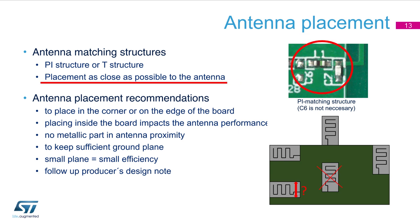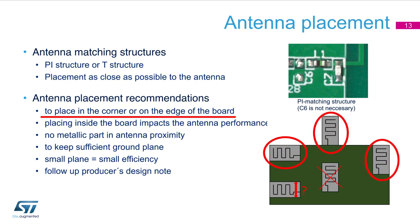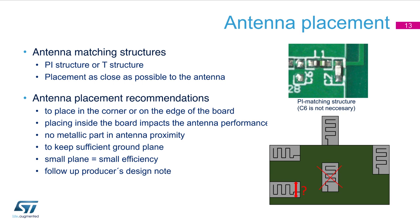The antenna should be matched by a matching network that is as close as possible to the antenna. Commonly P or T structures are used, placed just at the antenna port. The antenna itself must be placed in the corner or on the edge of the board — placing it inside the board affects the antenna's performance because of the metal plane around it. It should not be disturbed by any metallic part that impacts the impedance of the antenna. This is valid for both PCB and chip antennas. These types of antennas must have a sufficient ground plane. The ground behaves as a mirror and is a necessary condition for functionality.